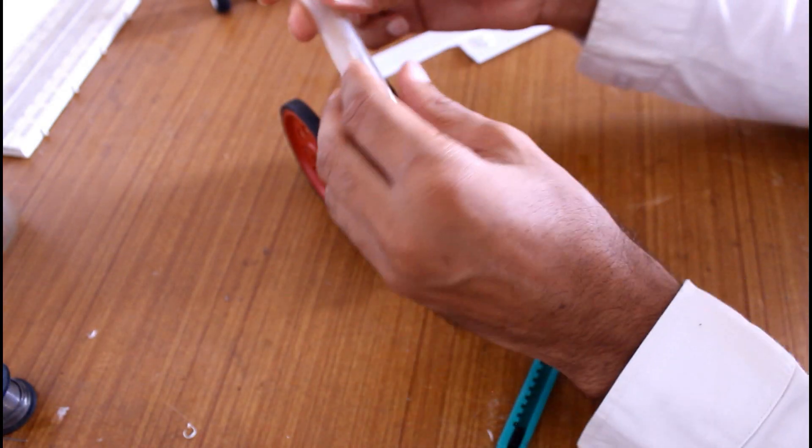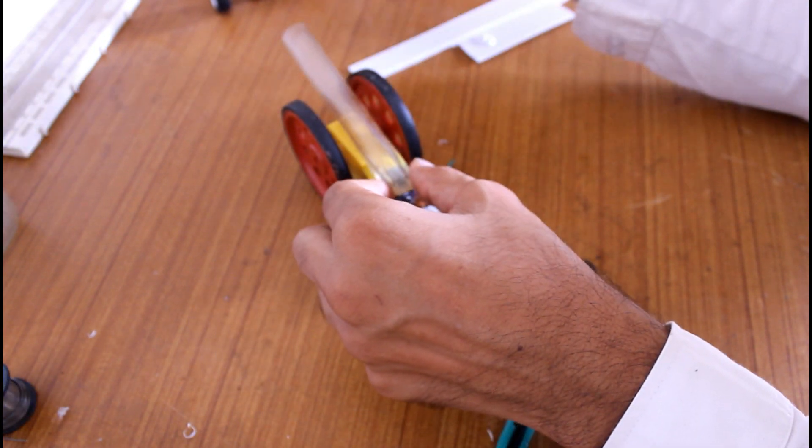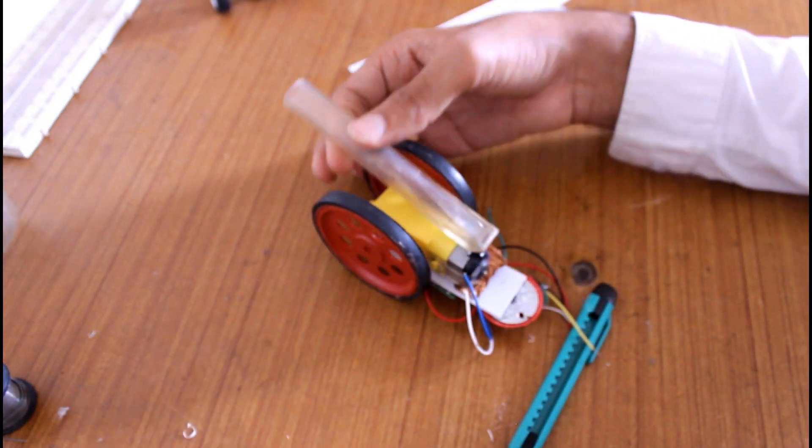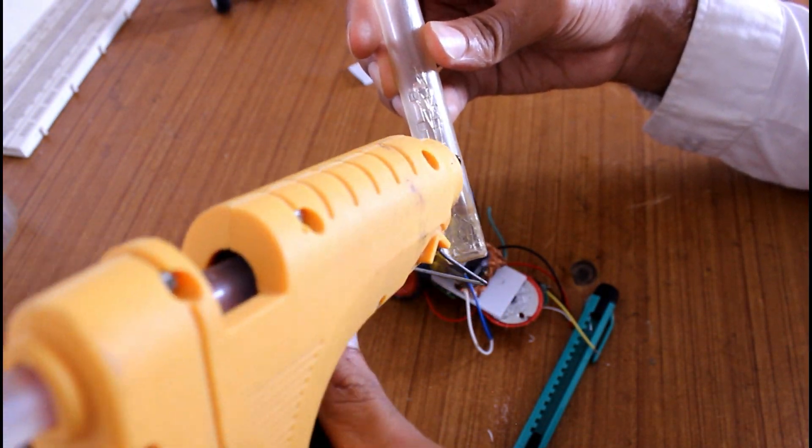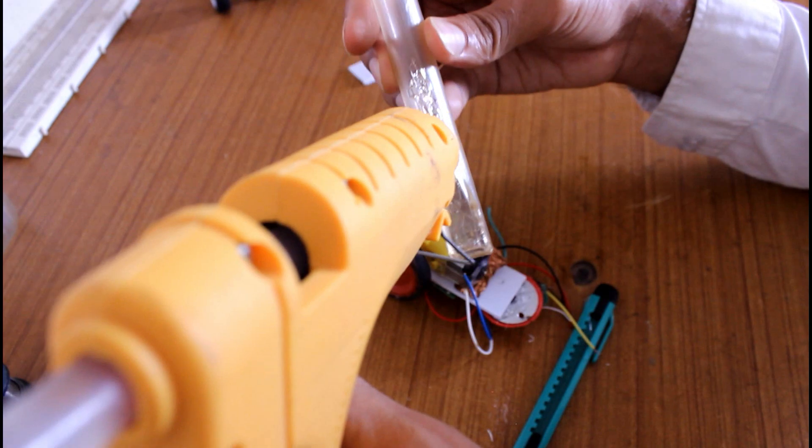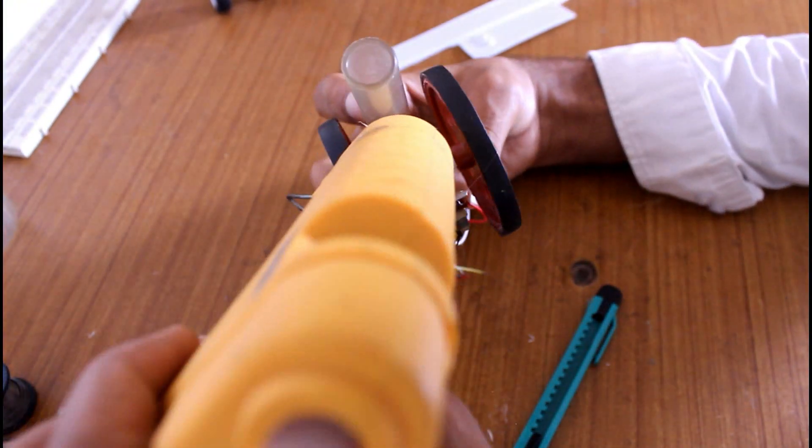And here I am using this transparent pipe and it needed to be blocked from one side, which I have already done. And now I will stick it on its place.